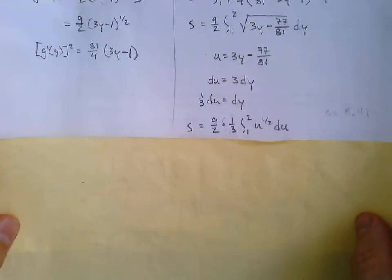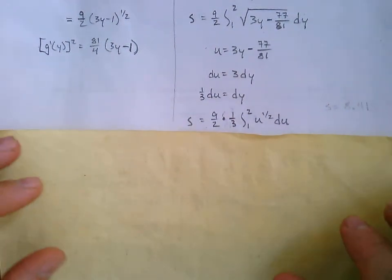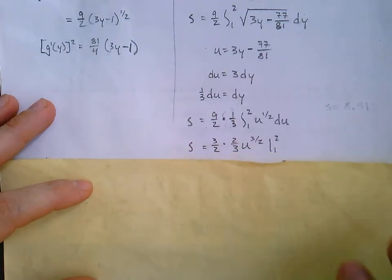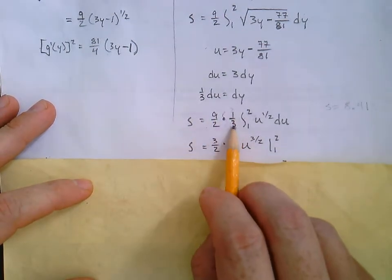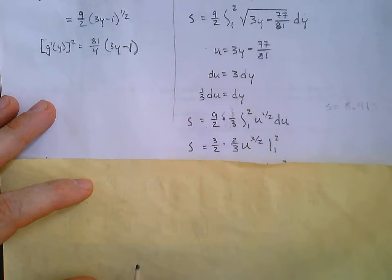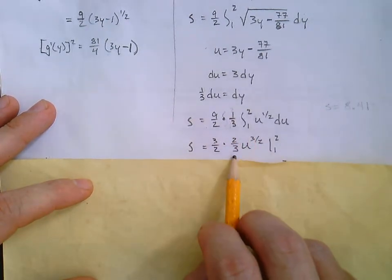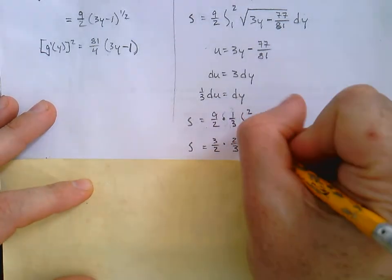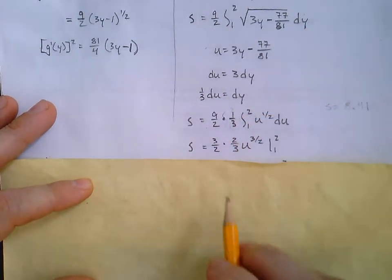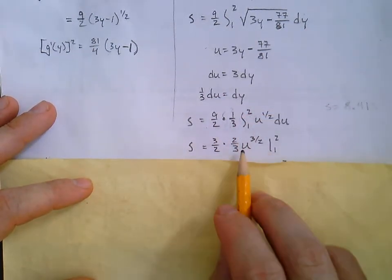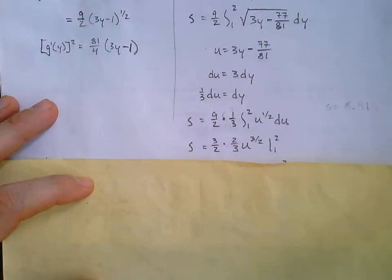And so, continuing from here, simplifying the 9 over 2 and the 1 third, we've got 3 over 2. And then the antiderivative there, well, that'd be 2 thirds u to the 3 over 2. Going to evaluate from 1 to 2. Of course, we've got to put our u back in first.